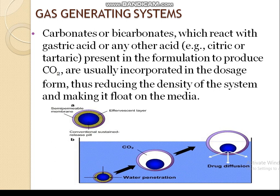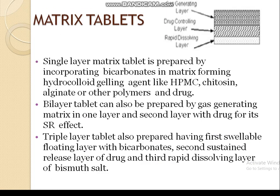The next approach is matrix tablets. A single layer matrix tablet is prepared by incorporating bicarbonates in a matrix-forming hydrocolloid, with an acid and gelling agents like HPMC, chitosan, alginate, or other polymers and drugs. Bi-layer and triple layer tablets are also prepared. In case of a bi-layer tablet, one layer is incorporated with a gas generating matrix and another layer is incorporated with the drug with sustained release effect.